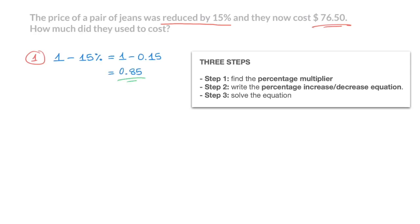And that's our first step done. We move on to step two, and in step two, we need to write the percentage increase or decrease equation. Again, in this case, we're dealing with a percentage decrease, so we need to write the percentage decrease equation. Well, if we go ahead and call the initial price of the pair of jeans capital P, then we know that if we decrease P by 15%, it has to equal 76.50. In other words, if we multiply P by 0.85, that's the multiplier we just found in step one, then it has to equal 76.50, or 76.5. And that's our step two done.